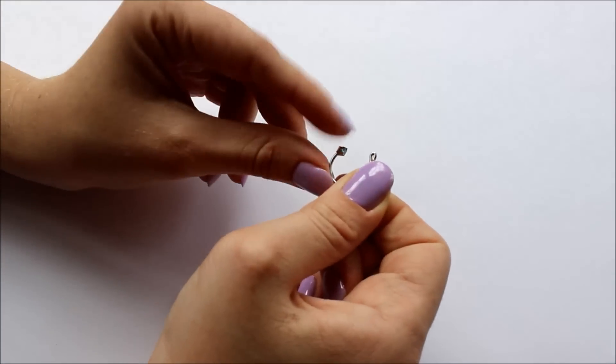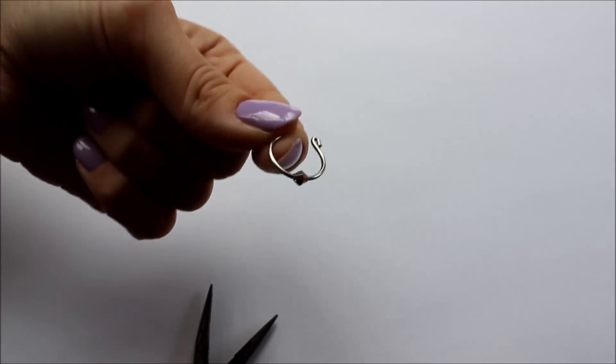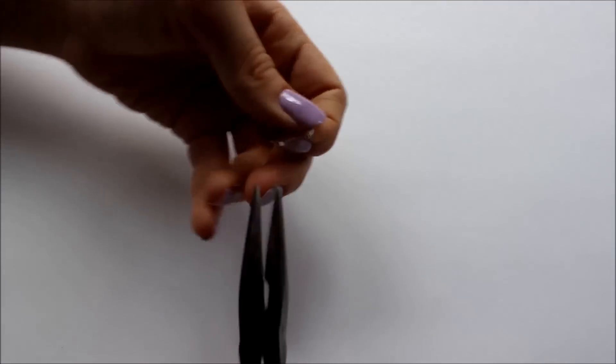If you want your septum ring to have a bead on it, add the bead after turning the first side, but before turning the other side. Once you turn over the other side, the bead will be secured.